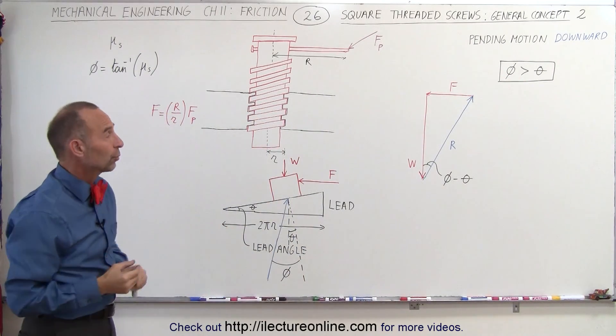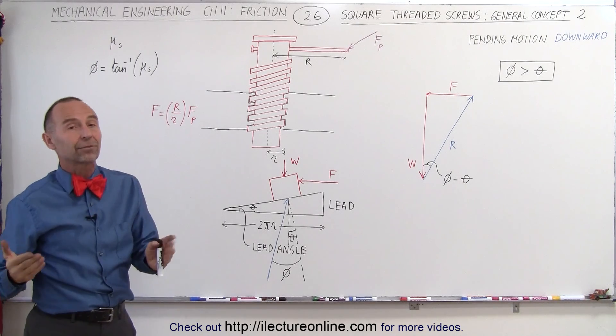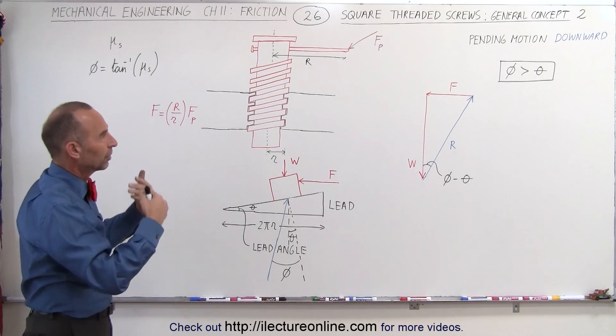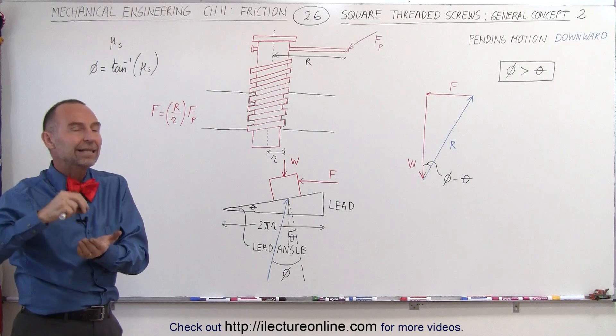In the next video we'll switch things around and we'll call the angle phi smaller than the angle theta to see what happens on the case where we have pending motion downward.